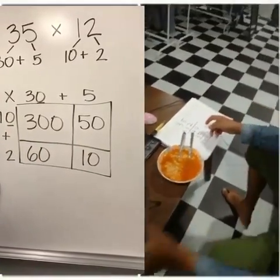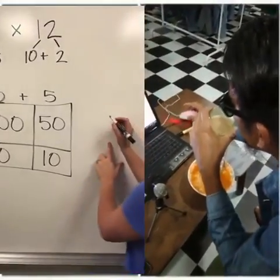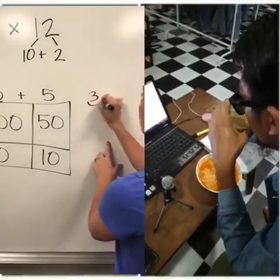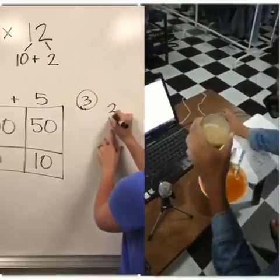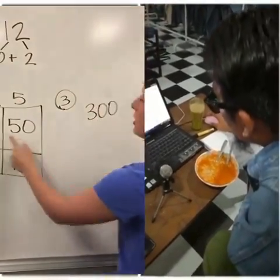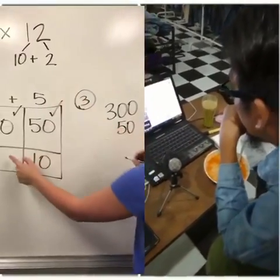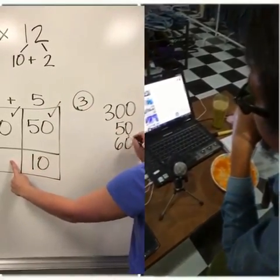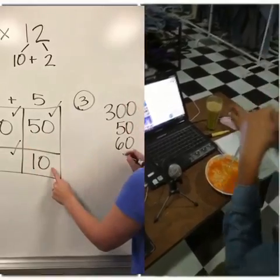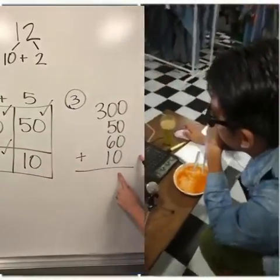Now all I have to do is add them up. So over here I'm gonna add 300. And I like to check them off as I go. 50, 60, and 10. Make sure you line up your places too.